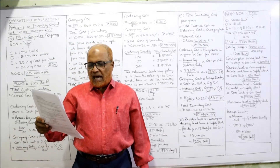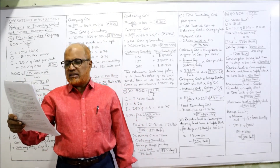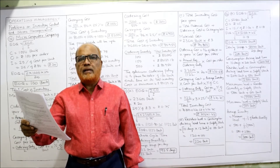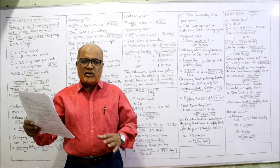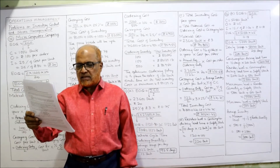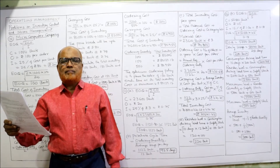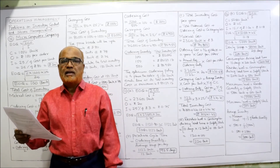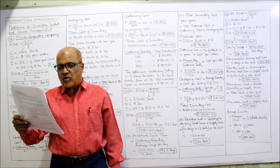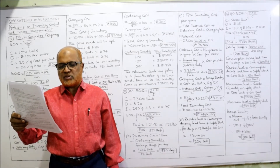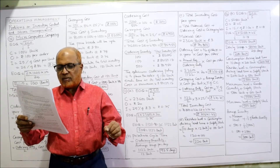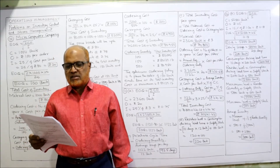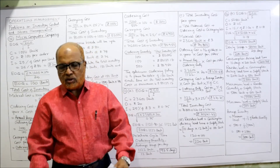Problem 11: The annual demand for a product is 23,600 units, with an average usage of 12 units per day. Lead time is 10 days. Ordering cost is 20 rupees per order, annual carrying cost is 25% of annual inventory, and the price per unit is 3 rupees. Four questions are asked: A) EOQ, B) purchase cycle time, C) total inventory cost, D) reorder level.